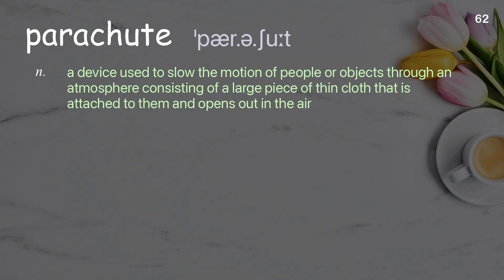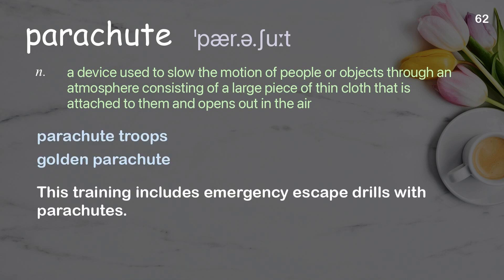Parachute: A device used to slow the motion of people or objects through an atmosphere, consisting of a large piece of thin cloth that is attached to them and opens out in the air. Examples: Parachute troops. Golden parachute. This training includes emergency escape drills with parachutes.